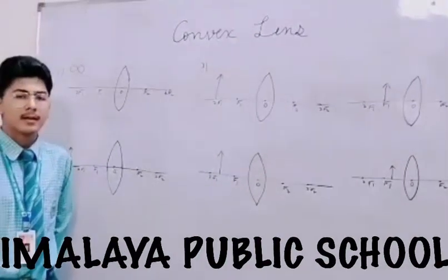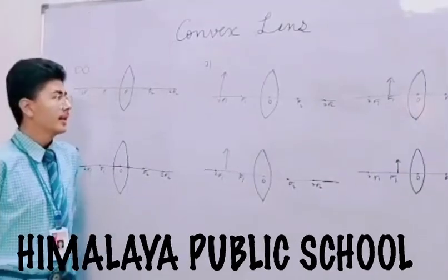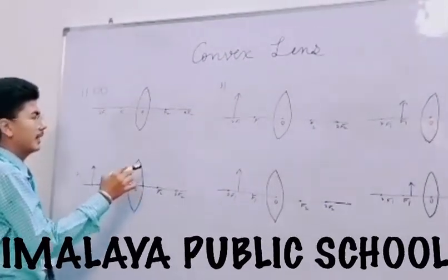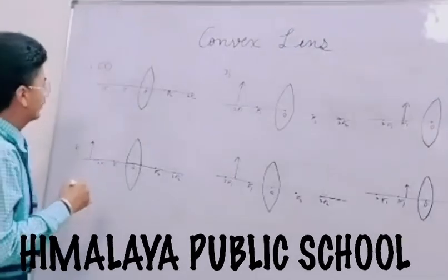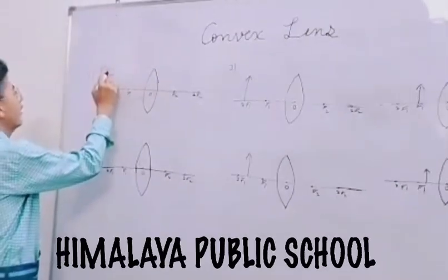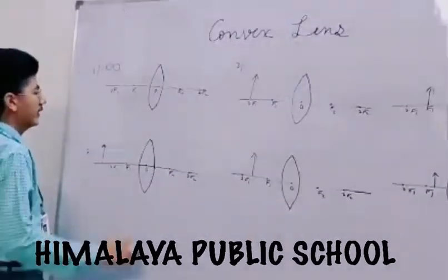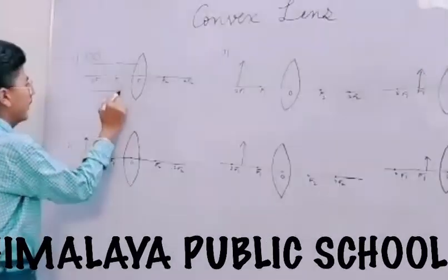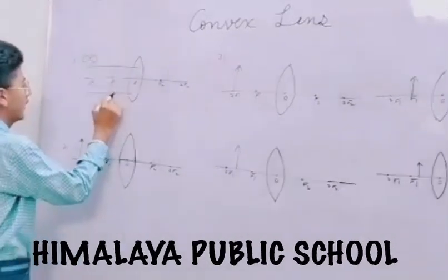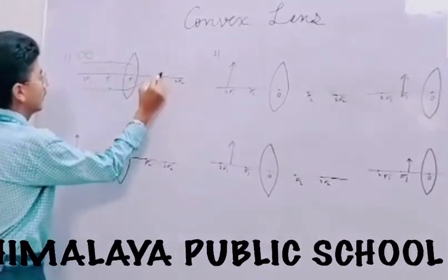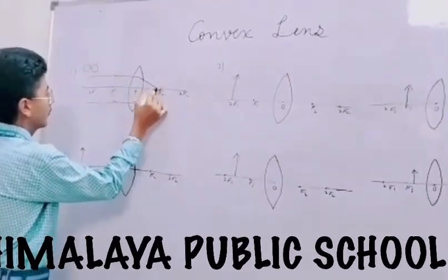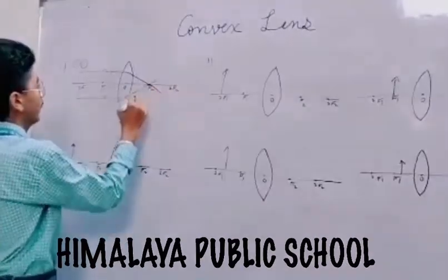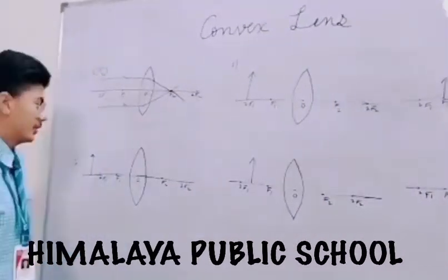Now I will draw the ray diagram of convex lens. There are six conditions for its construction according to the position of the object. First condition is when the object is placed at infinity. The rays coming from object at infinity are always parallel to the principal axis. After refraction both rays will pass through the principal focus. So the image is formed on the principal focus and the size of the image is highly diminished.